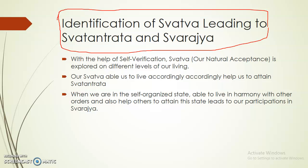Swatva helps us attain swatantrata. What is swarajya? When you are more organized, you are able to live in harmony with other orders and also help others to participate in it — helping others understand how to work — that is called swarajya.